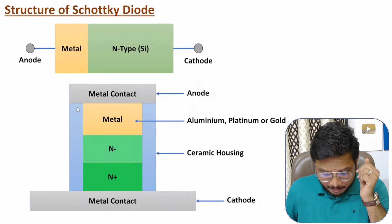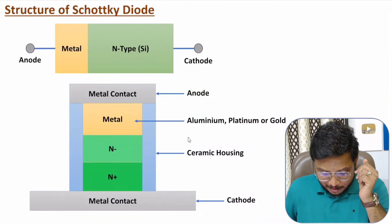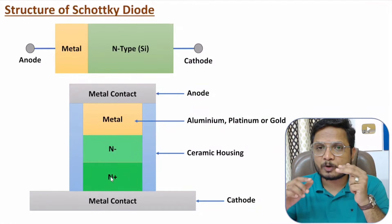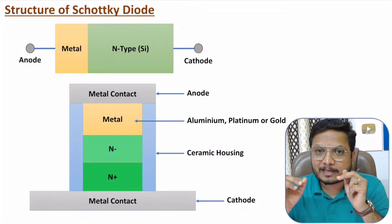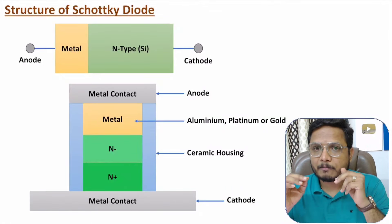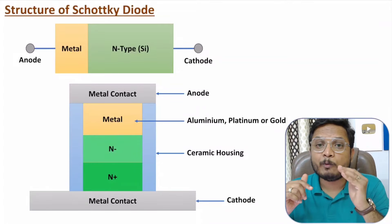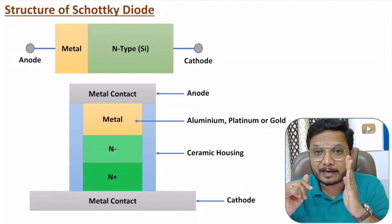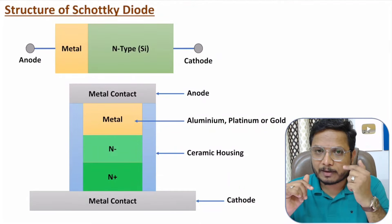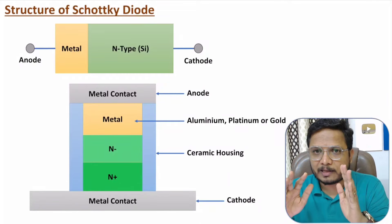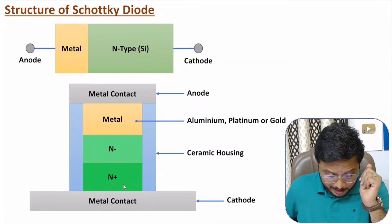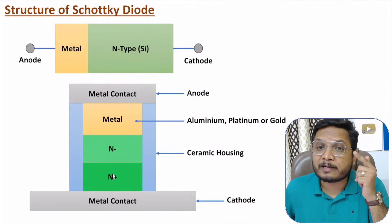For microwave Schottky diodes, a ceramic housing is provided. The metal can be aluminum, platinum, or gold. In this structure you can observe N-minus and N-plus regions. N-minus is N-type semiconductor material but with lower doping concentration — meaning fewer electrons, even though majority charge carriers are still electrons. N-plus has a higher doping concentration of electrons.